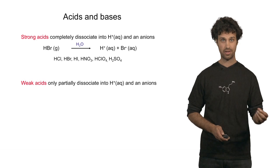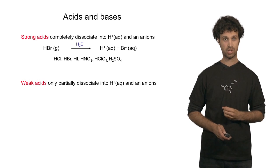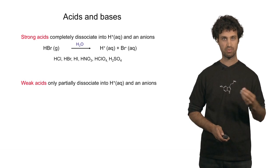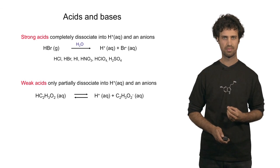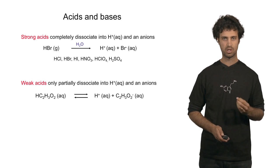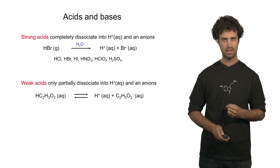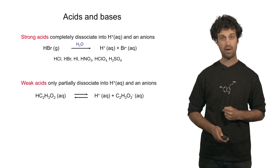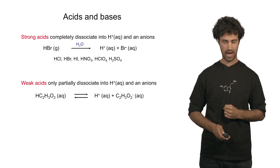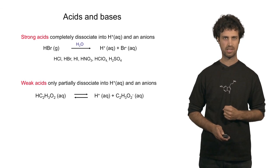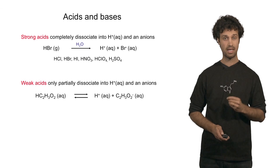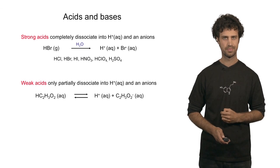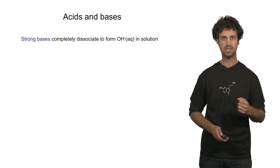Weak acids, on the other hand, do not completely dissociate into protons and anions. Acetic acid is an example — it splits into protons and acetate anions. However, this is a reversible reaction, which means that only part of the acetic acid molecules will be dissociating into protons and anions. The same is true for bases.